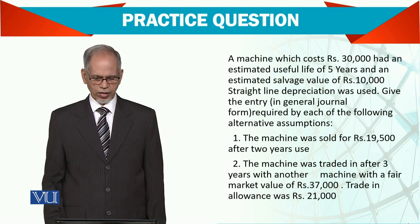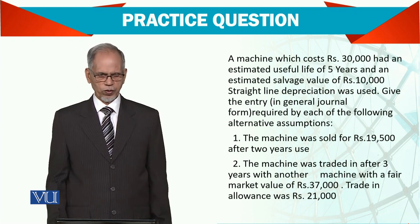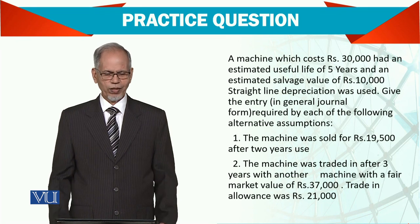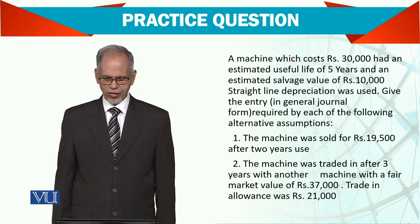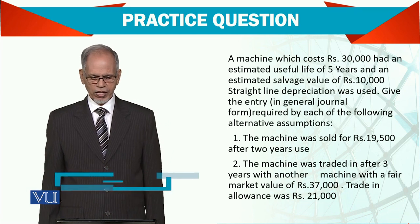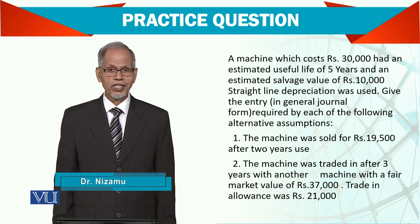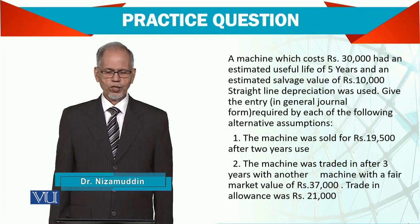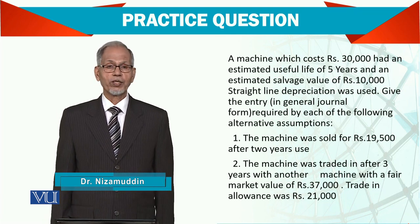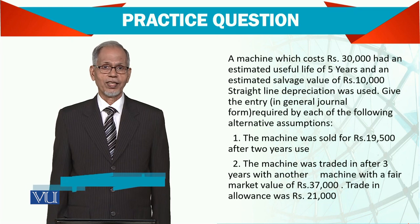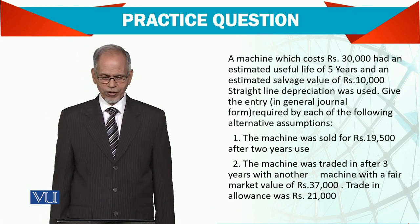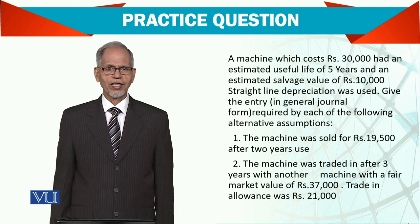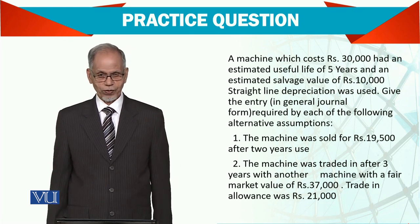There are two points — how the entry will be recorded in general. The first one: the machine was sold for 19,500 after 2 years. So you need to work out, out of 30,000, with 2 years of depreciation. Whatever depreciation comes to, deduct that, then compare with 19,500, and if there is a profit or loss, we have to record it.